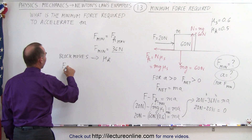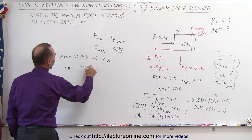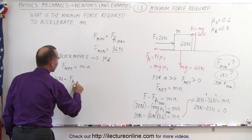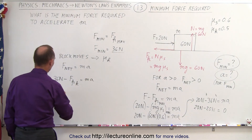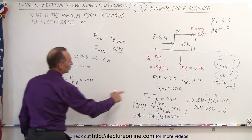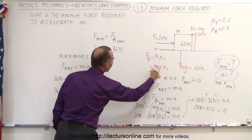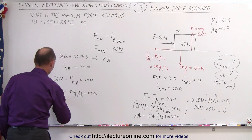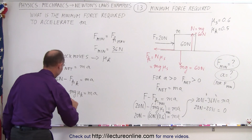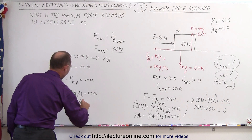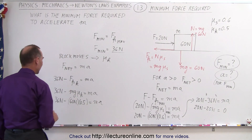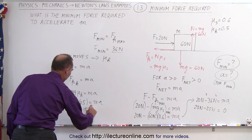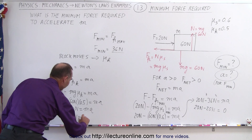Now we can say that F_net equals mass times acceleration. The net force will be the 36 Newtons applied minus the friction force due to kinetic friction: 36 Newtons minus mg × μ_k equals ma. So 36 Newtons minus 60 Newtons times 0.5 equals ma — that's 36 Newtons minus 30 Newtons, giving us a net force of 6 Newtons to accelerate the block.